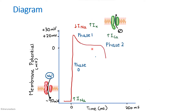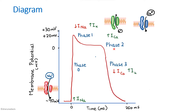During the plateau phase (phase 2), calcium channels open up. The efflux of potassium is compensated by the influx of calcium, which is why the potential remains unchanged. In phase 3, slow repolarization, the calcium current decreases while the potassium current continues to increase, causing the potential to fall. Phase 4 is the resting membrane potential.